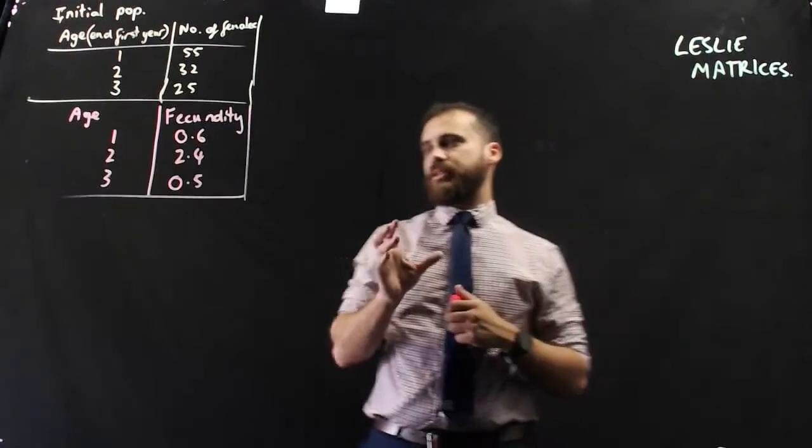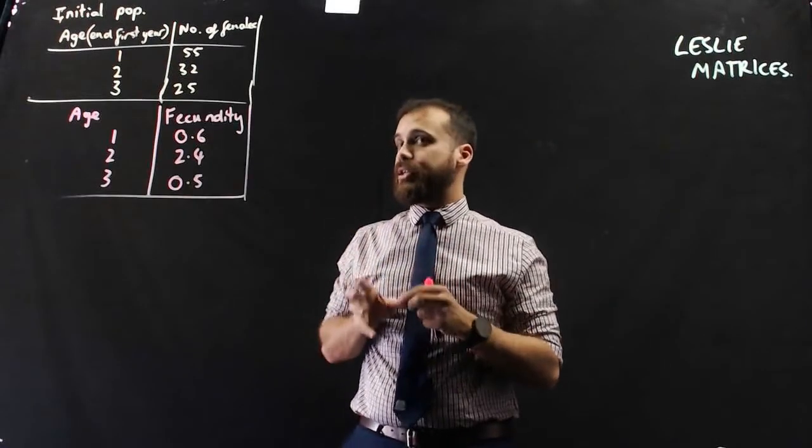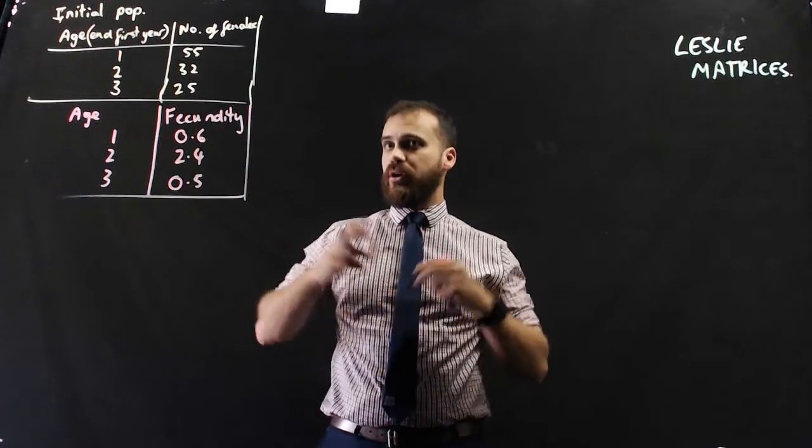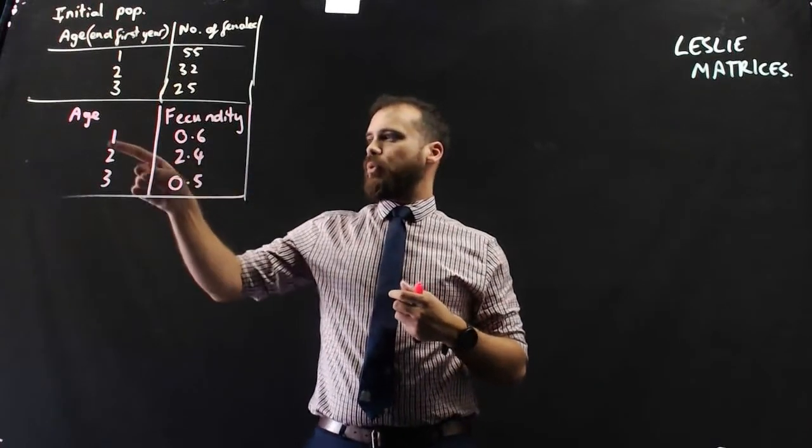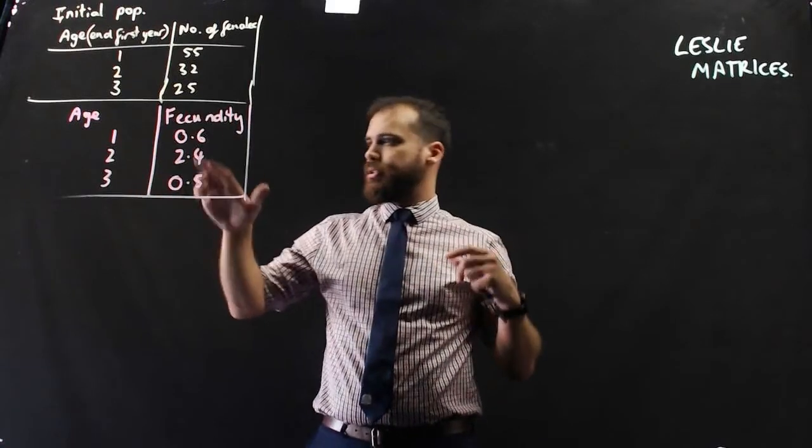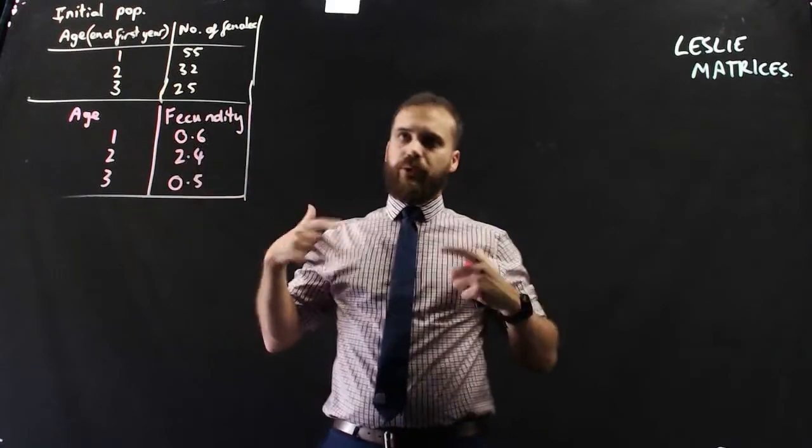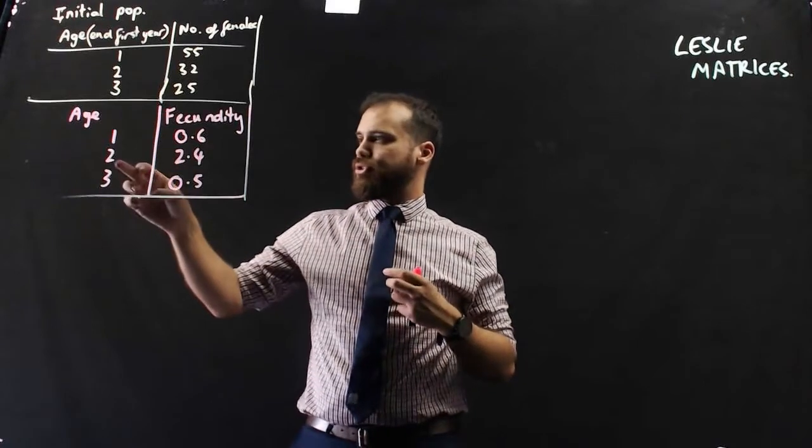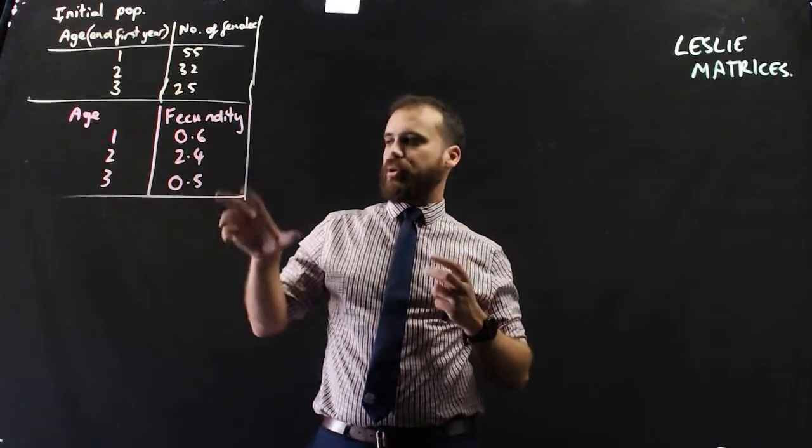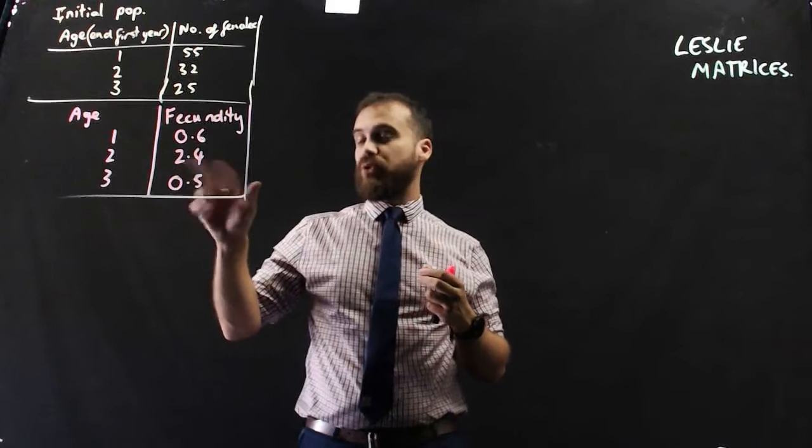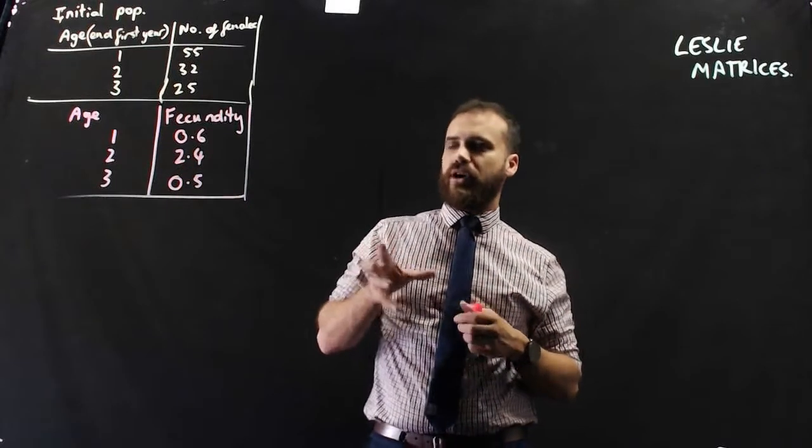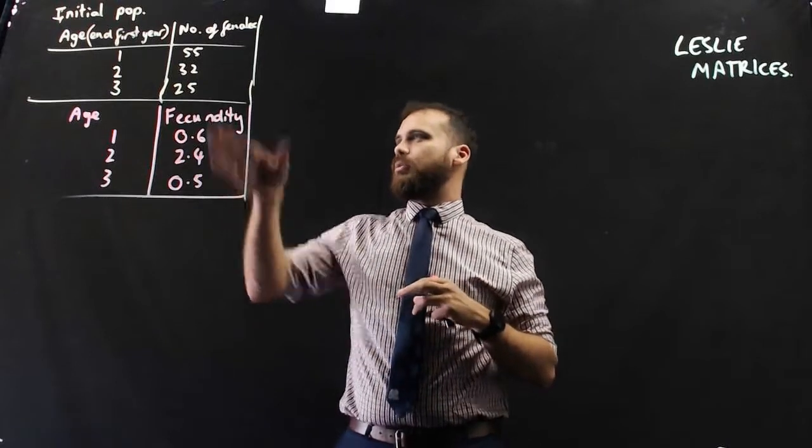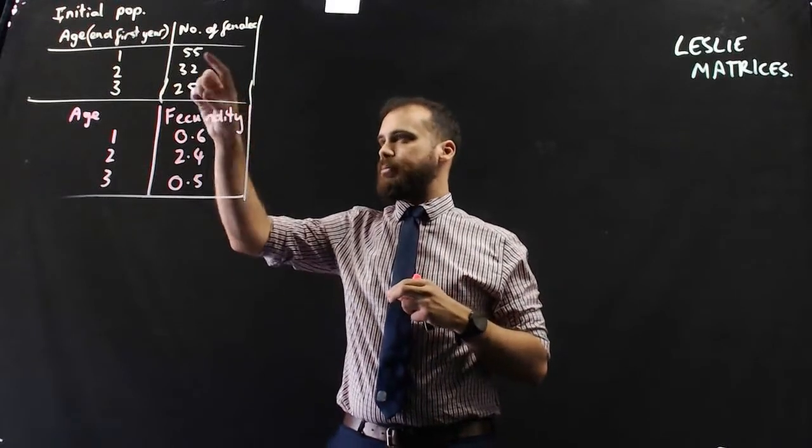Here we have a breakdown of our fecundity rates. Fecundity is just another word for reproduction rates. The average one-year-old rat has 0.6 babies in a year. The average two-year-old rat, this is prime reproduction time, has 2.4 babies in a year. And the average three-year-old is having 0.5 babies in a year.